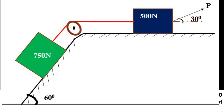In this system, there are two blocks — one block is 750N and the other block is 500N. These two blocks are connected by a string. The pulley is smooth, so we will not consider friction force at the pulley. The 500N block is connected with force P.